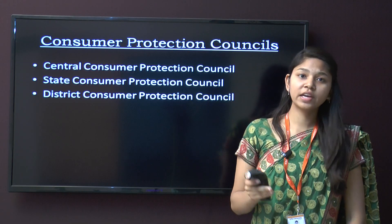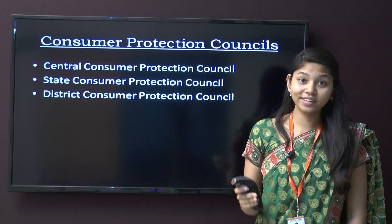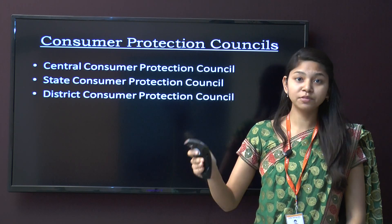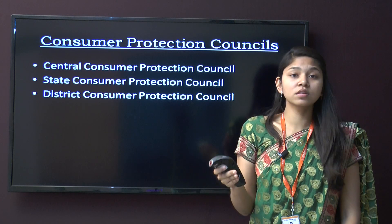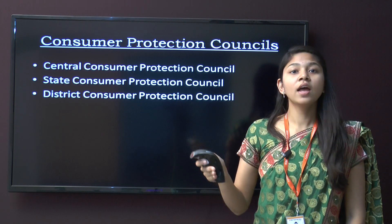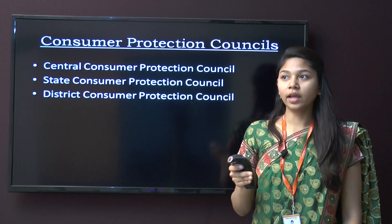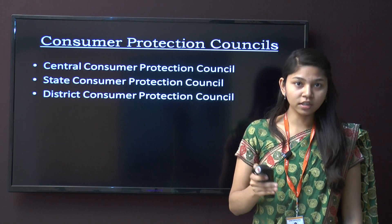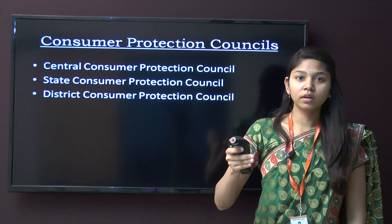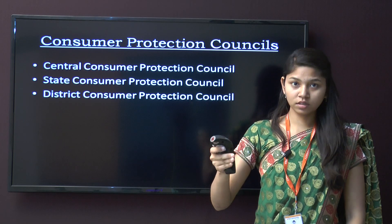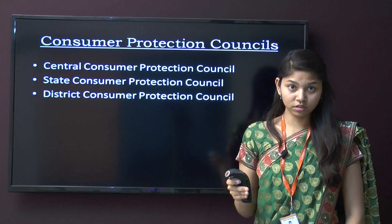In the last lecture we have seen what is the consumer, what was the background behind it, what was the objective of the Consumer Protection Act, who is the consumer, who is the complainant and what is the complaint. We have seen in the objective that there is a need of speedy justice, and for that purpose the Consumer Protection Act came into existence.